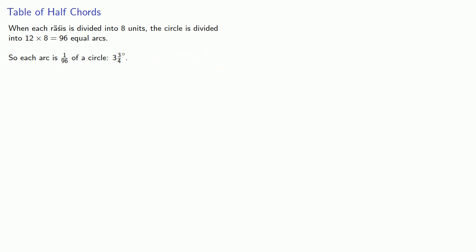And what we now have is a table of half chords that correspond to the values of radius 3438 sine theta, for theta, a multiple of 3 3/4 degrees. And historically, this is the first time that we get what we would properly call a table of sine values.